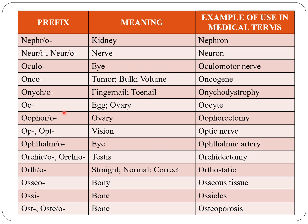Oo indicates ovary or egg, as in oocyte. Oophoro indicates ovary, as in oophorectomy. Opt or optic indicates vision, as in optic nerve. Ophthalmo indicates eye, as in ophthalmic artery. Orchid or orchido indicates testis, for example orchidectomy.